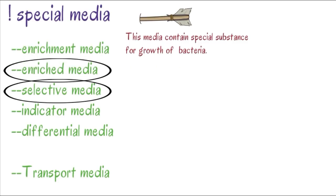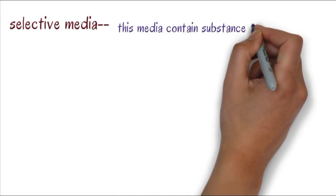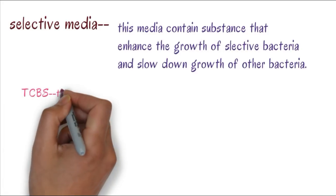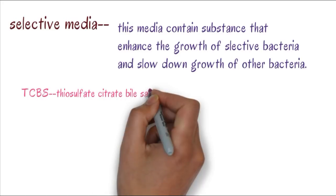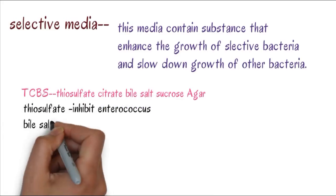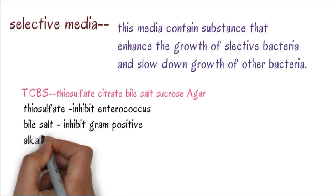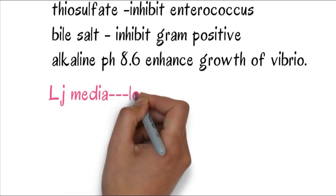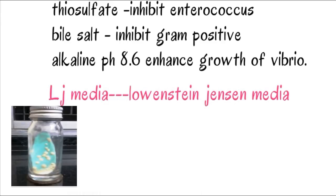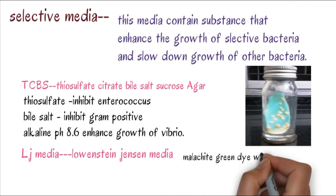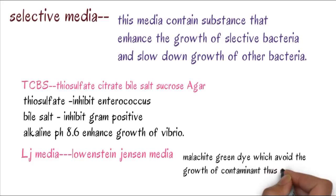Selective media contains substances that enhance the growth of some selective organisms and slow down the growth of other bacteria. TCBS (thiosulfate citrate bile salt sucrose agar) contains thiosulfate and bile salt which inhibit the growth of enterococcus and gram positives. The alkaline pH enhances the growth of Vibrio cholerae. LJ media (Lowenstein-Jensen) is selective for Mycobacterium tuberculosis and contains malachite green which avoids contaminants.